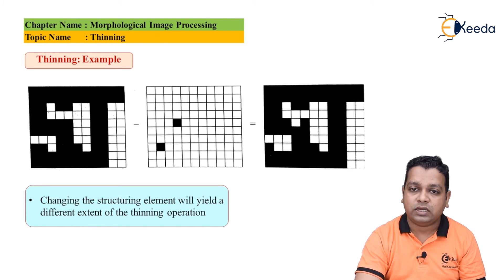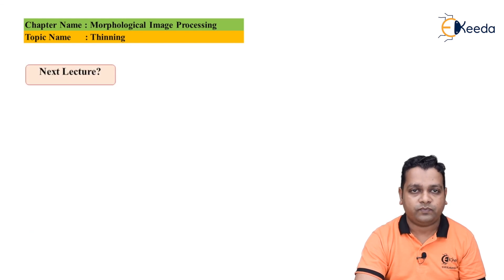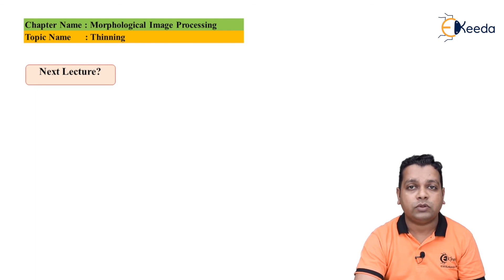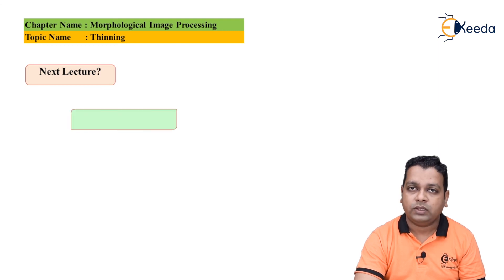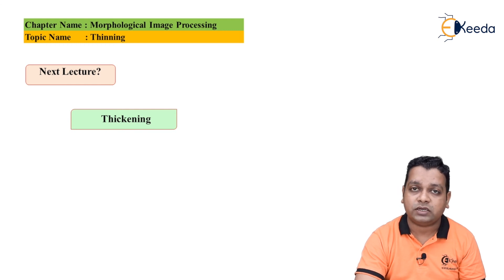Changing the structuring element will yield a different extent of the thinning operation. This is enough to address the thinning operation with the help of the morphological domain of image processing — it is very straightforward. In the next lecture we shall be addressing another morphological image processing operation: thickening.